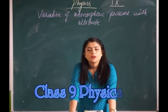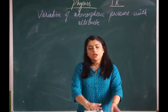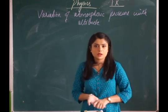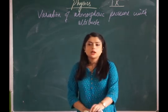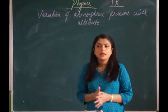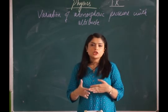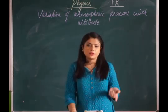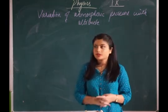Hello students, welcome back. In the previous class we discussed about a simple barometer and its working, which is used in measuring the atmospheric pressure. In today's class we will discuss about variation of atmospheric pressure with altitude. Atmospheric pressure is not the same everywhere — it is maximum at sea level and minimum at very high altitudes, so it gradually decreases as we move above the surface.